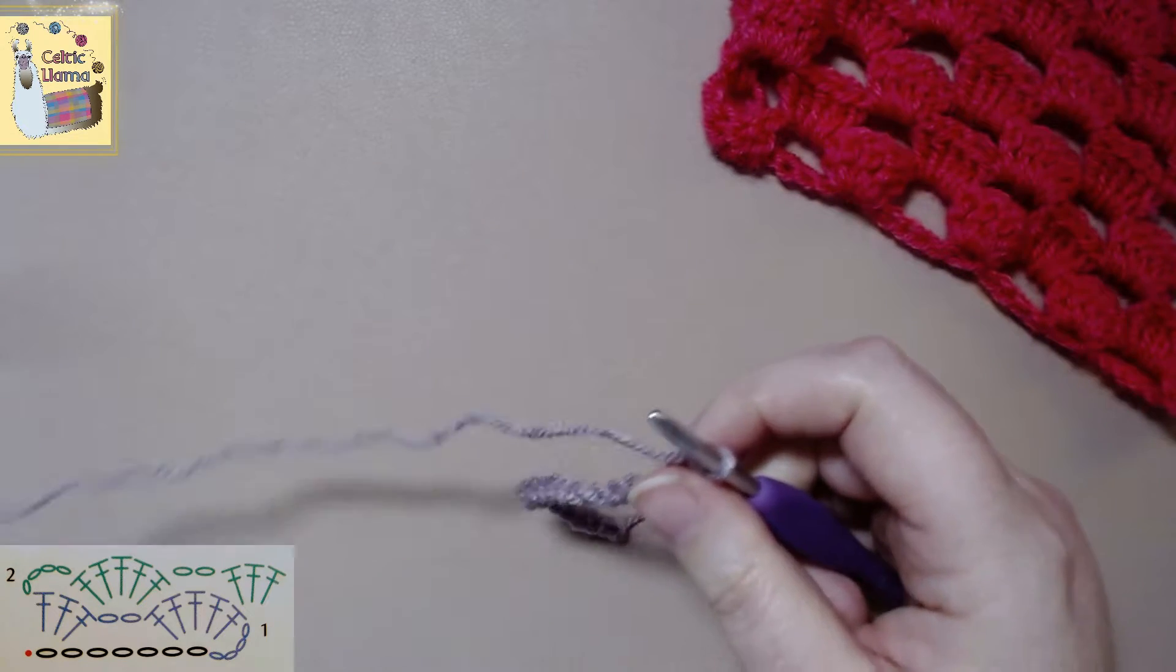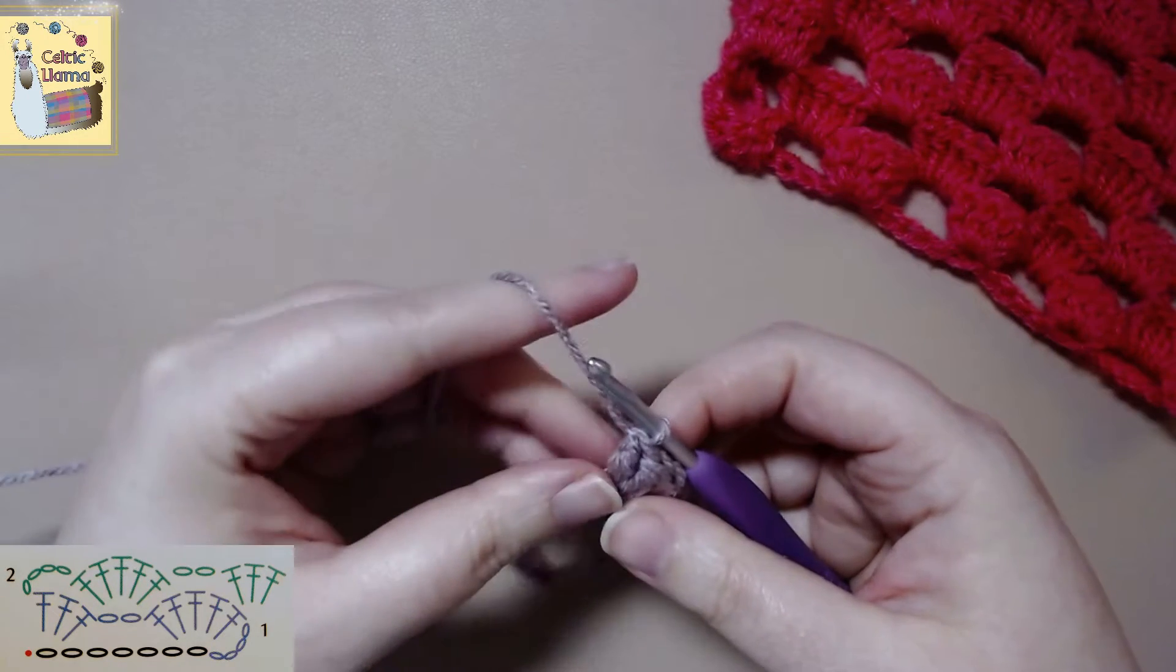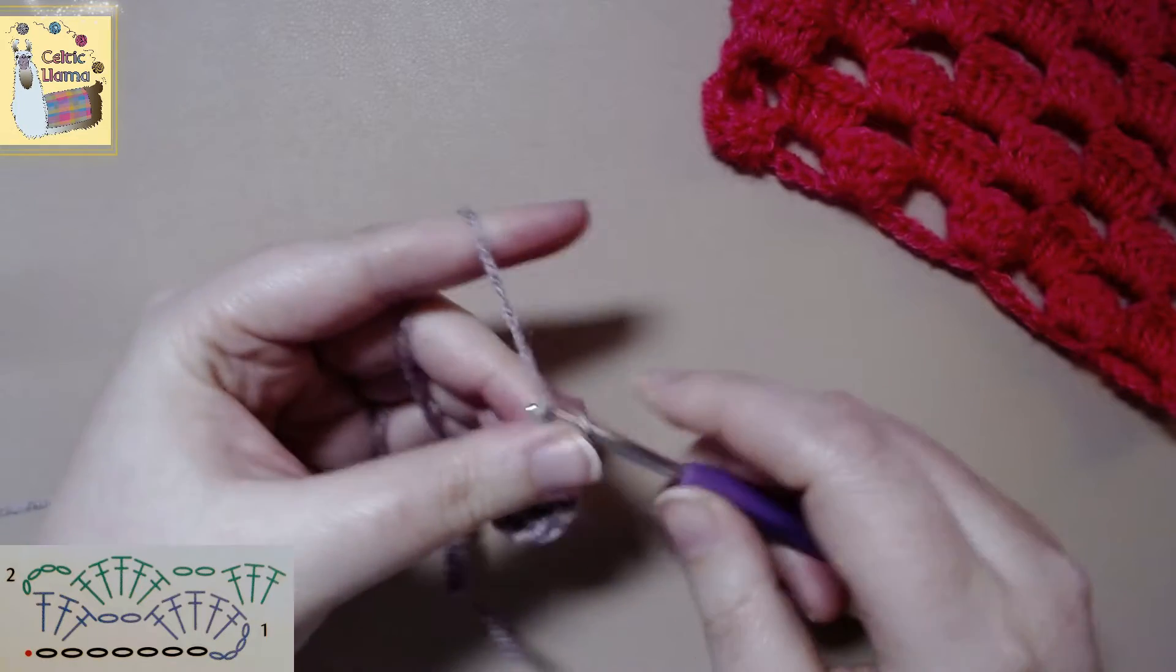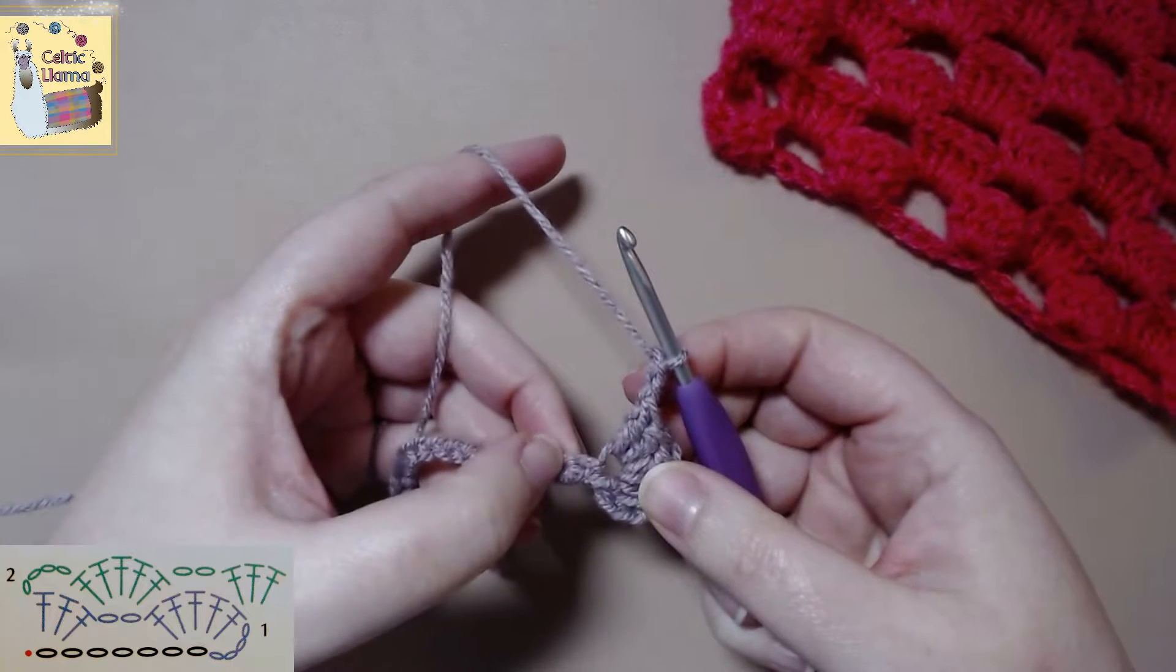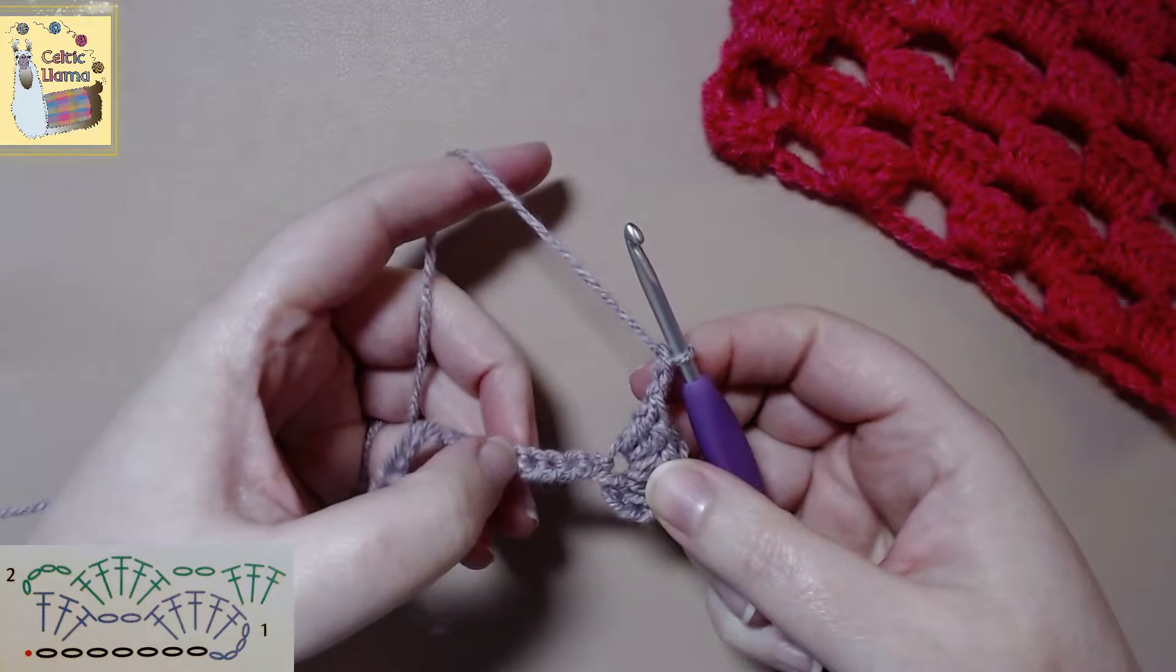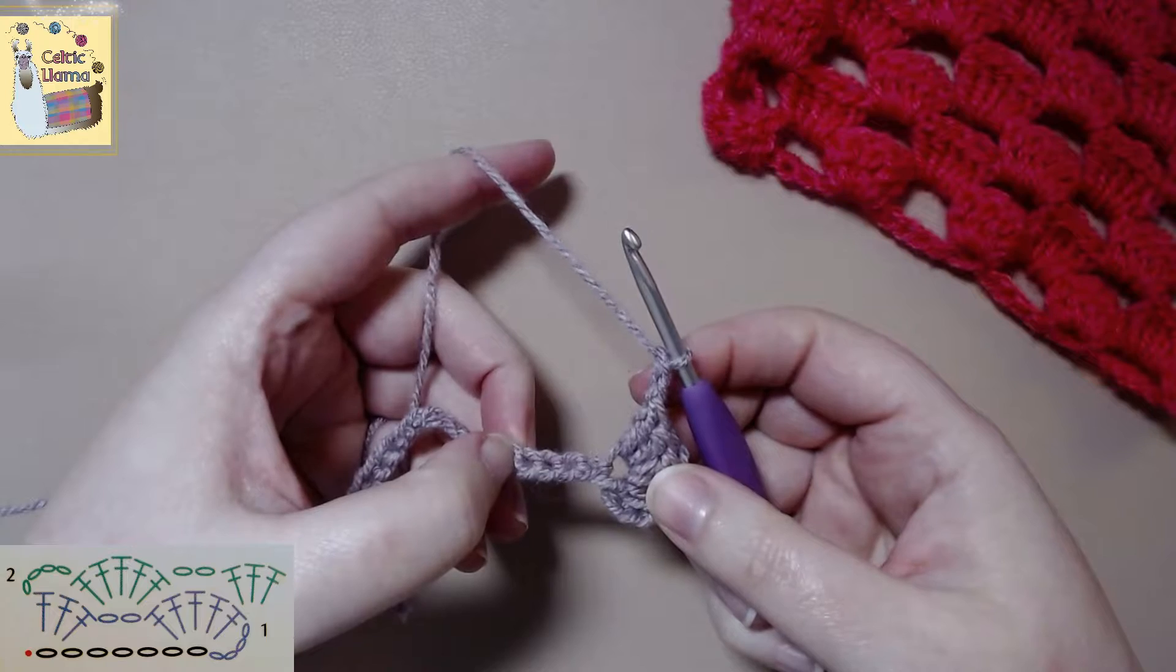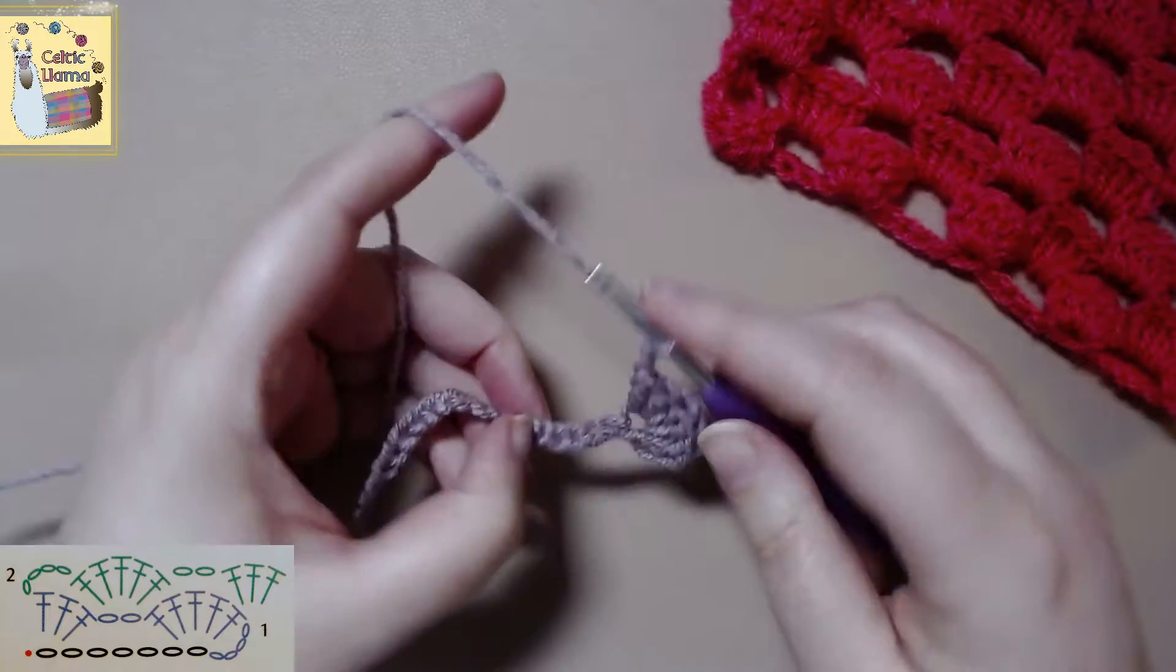Next we will want to chain two. We are going to skip five chains and in the sixth chain we are going to work five double crochets.